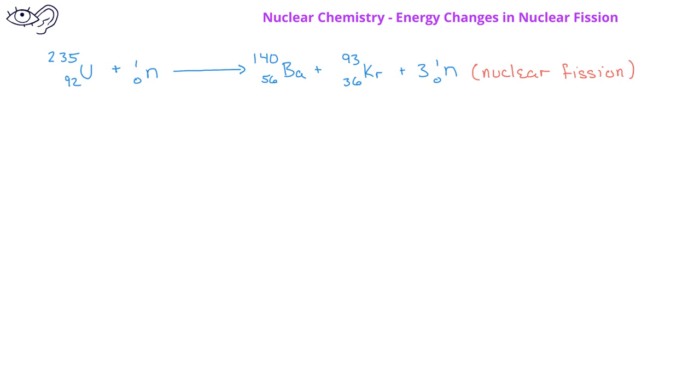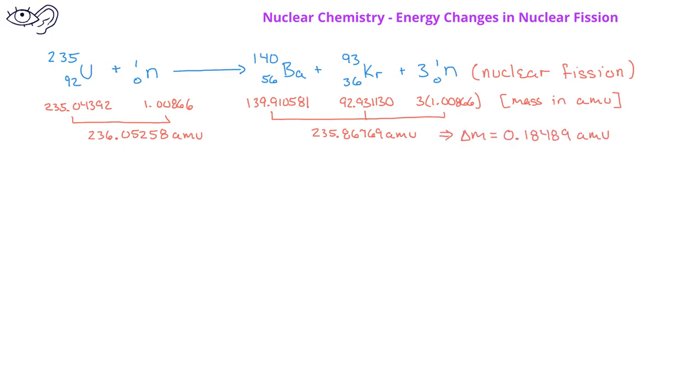If we look at the mass of the components on the reactant and product side of this nuclear equation, we see that there is a mass difference of 0.18489 atomic mass units, or AMU. This is kind of an odd result in that there is a decrease in mass from the reactants to the products.